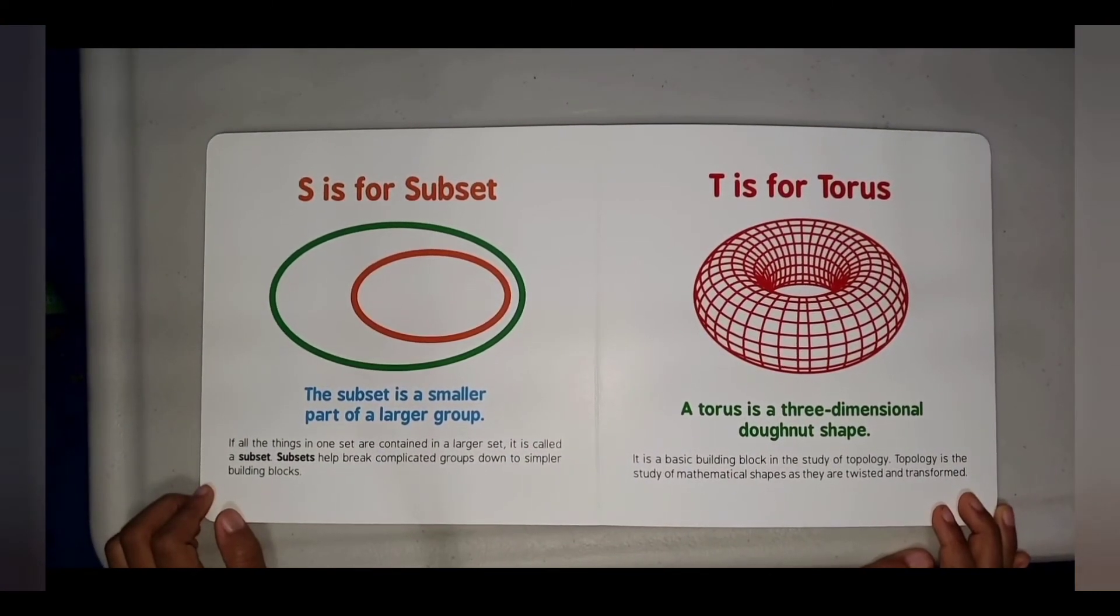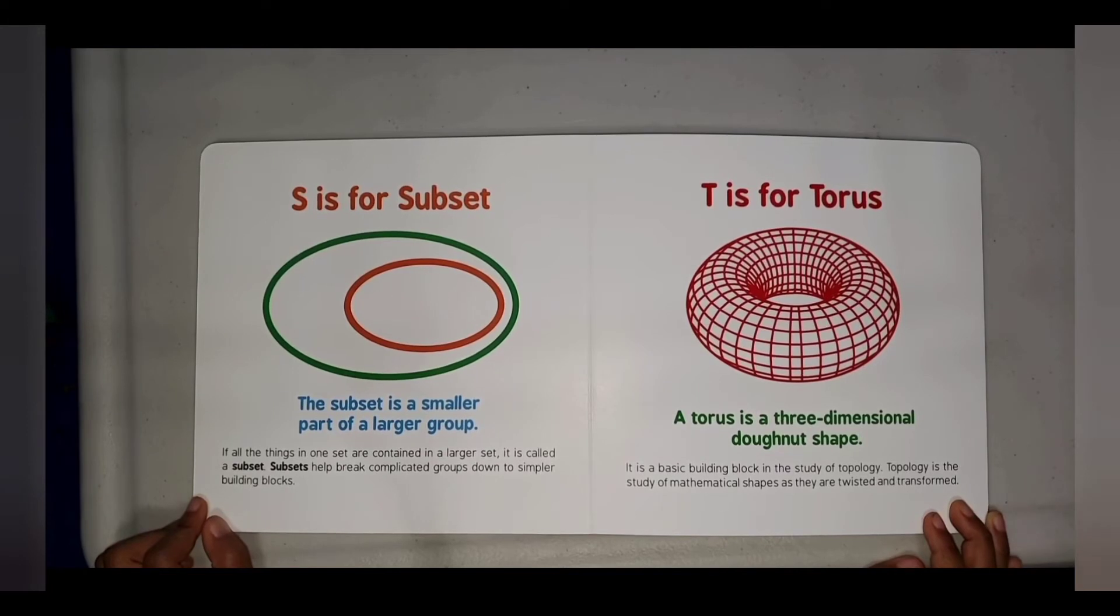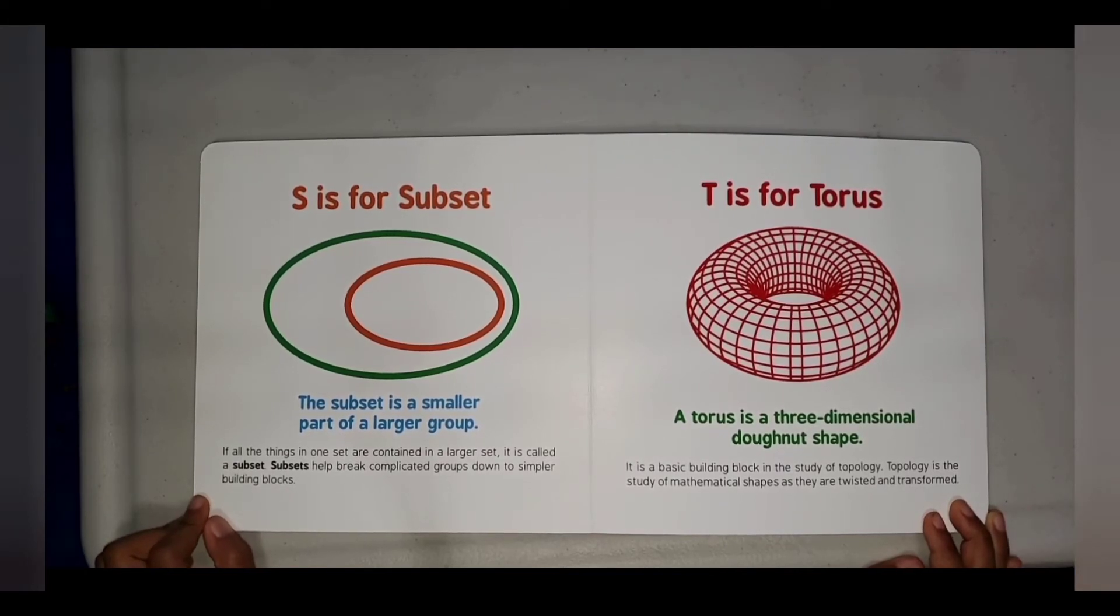S is for Subset. A subset is a smaller part of a larger group. If all of the things in one set are contained in a larger set, it's called a subset. Subsets help break complicated groups down to simpler building blocks.